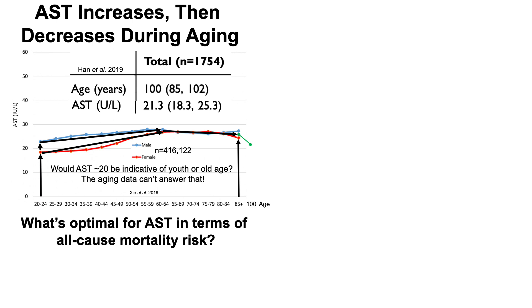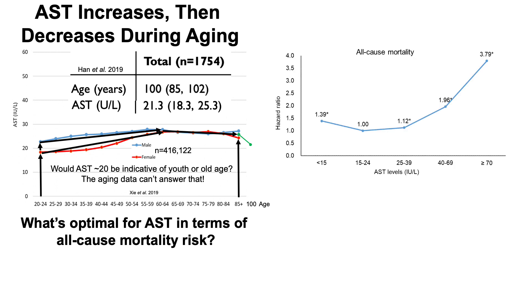So what's optimal for AST in terms of all-cause mortality risk? This data is from the same study — more than 416,000 subjects — showing the hazard ratio for all-cause mortality on the y-axis plotted against different levels of AST on the x-axis. They selected 15 to 24 for AST as the reference. There's a 39% increased risk for all-cause mortality for AST less than 15, but also a significantly increased all-cause mortality risk for AST values of 25 or higher.